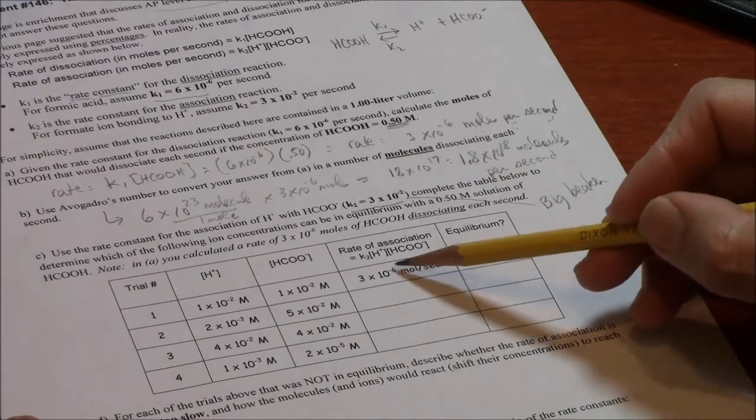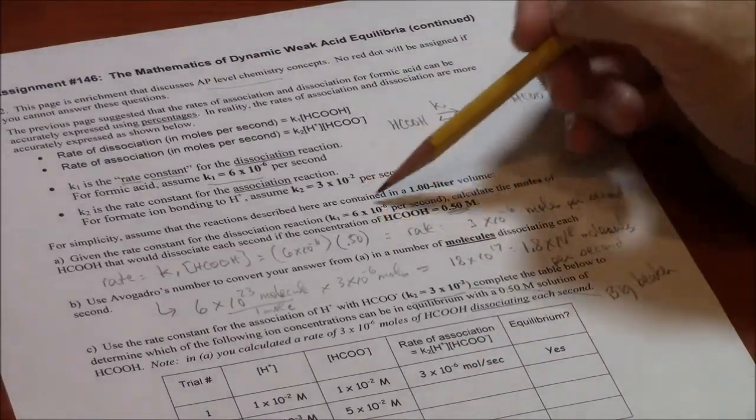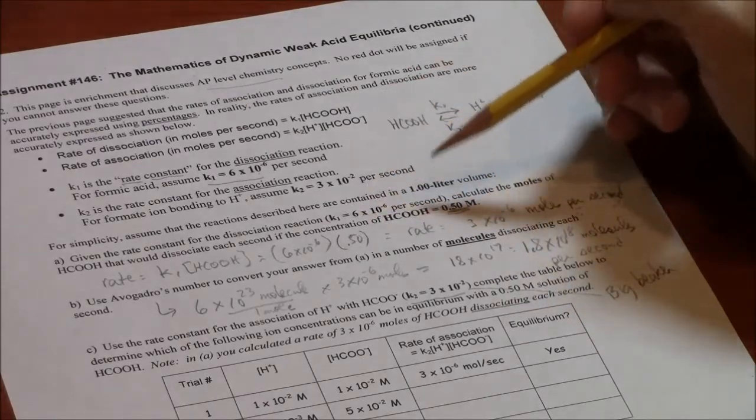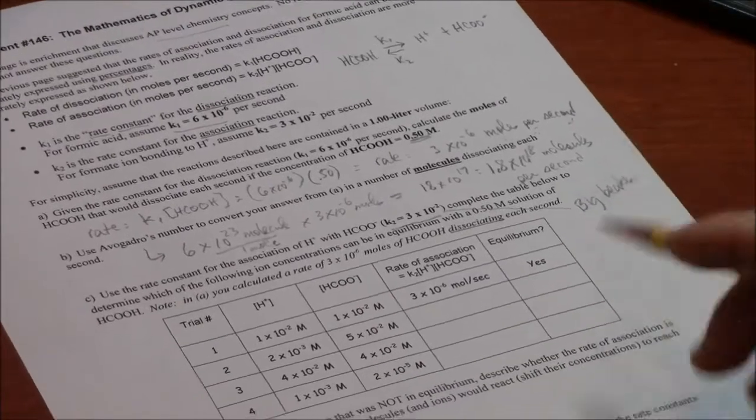So beaker size can be related directly to these rate constants. This right here, K1, is relatively small, and therefore a relatively small beaker in the model.